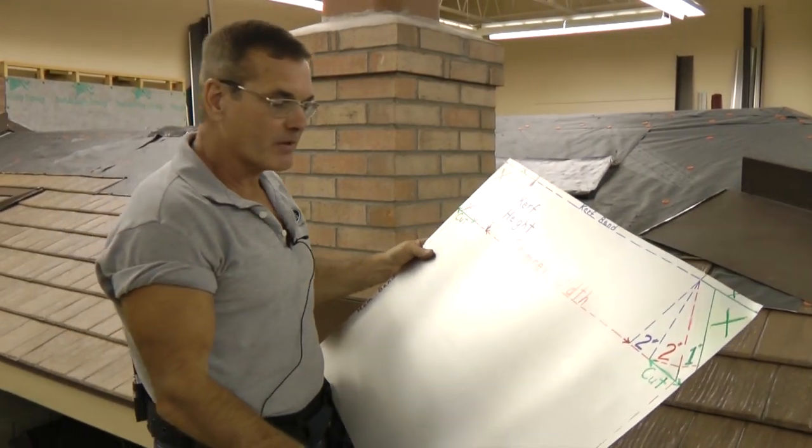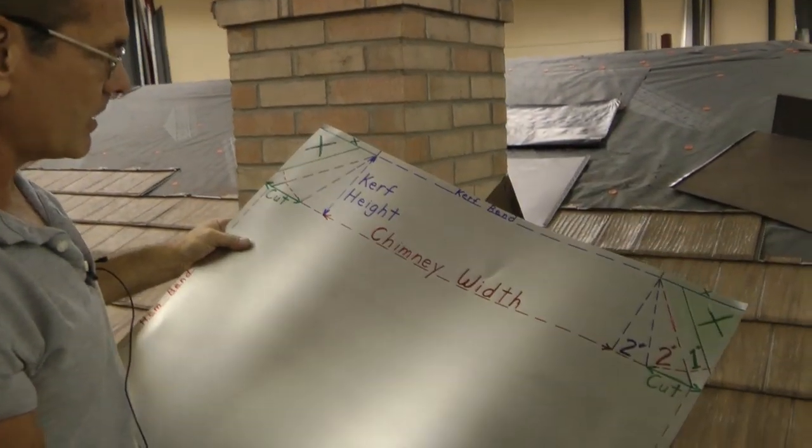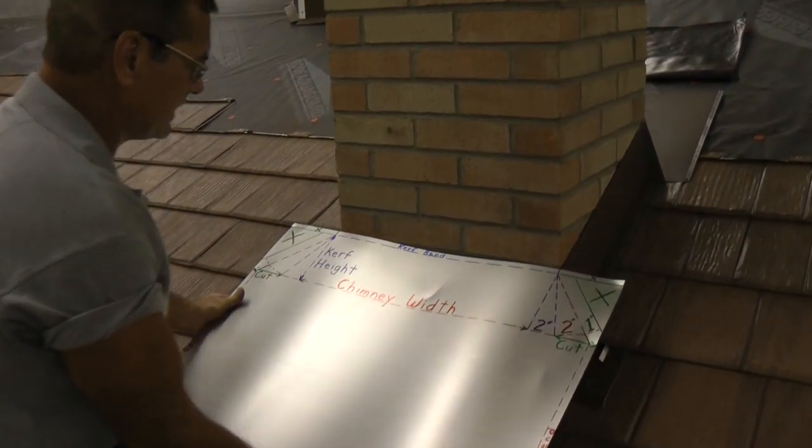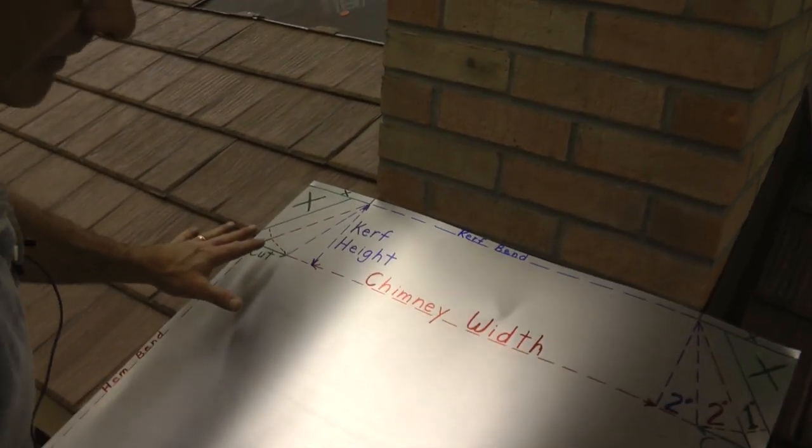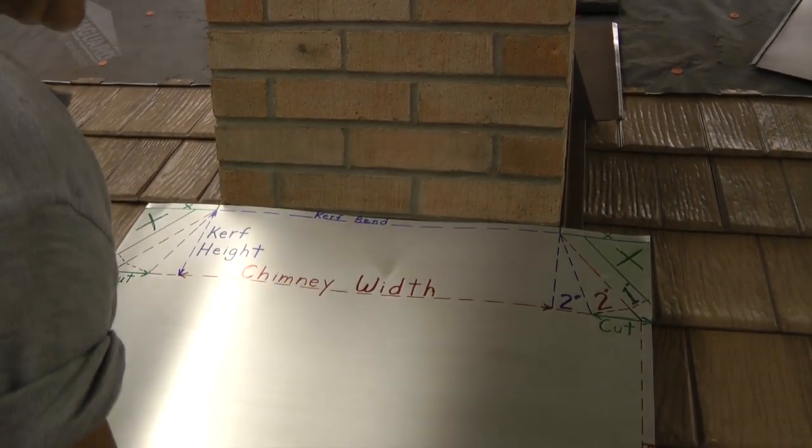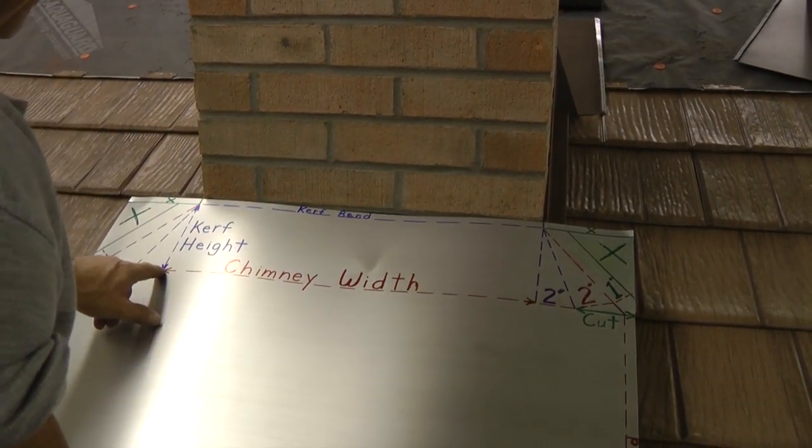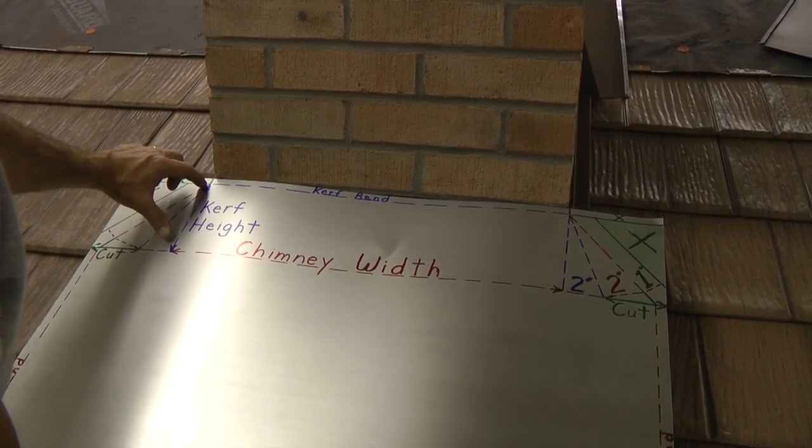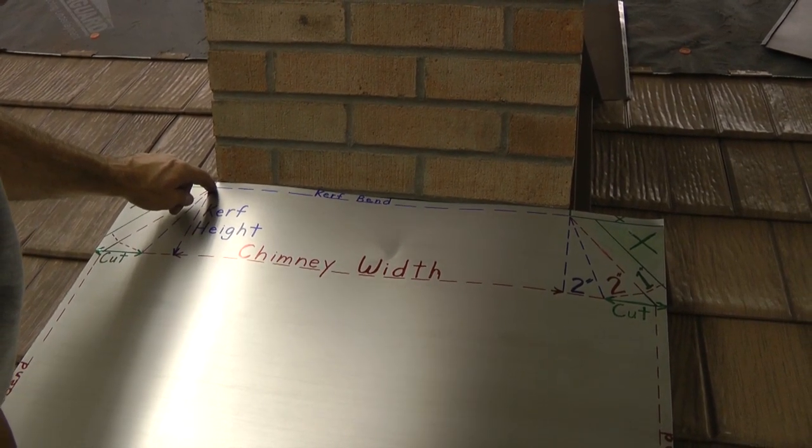Now I have cut a piece of coil stock that will be used to fashion the upslope flashing. And you notice that the coil stock again is about 10 inches wider. I made it 10 inches wider than the actual width of the chimney. So I have 5 inches on either side of the chimney. So this is the chimney width from here to here. The kerf height on the back of the chimney is represented by this blue arrow. And it goes from the roof deck up to the place where the kerf is bent.